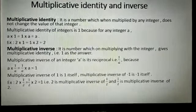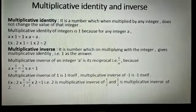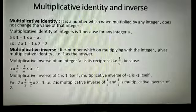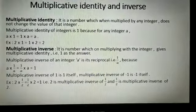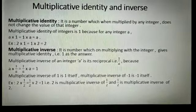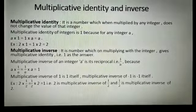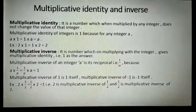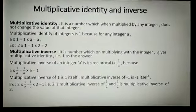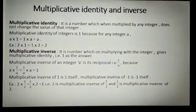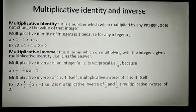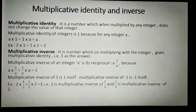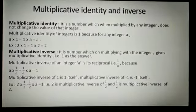Now, multiplicative inverse. It is a number which, on multiplying with the integer, gives multiplicative identity — that means 1 as the answer. The multiplicative inverse of an integer A is nothing but its reciprocal. That means, A multiplied by 1 upon A gives 1, or 1 upon A multiplied by A — A and A get cancelled — so you get the answer 1. Thus, the reciprocal is the inverse of the integer A.